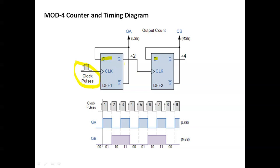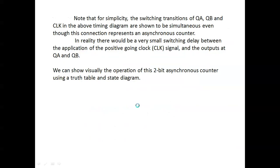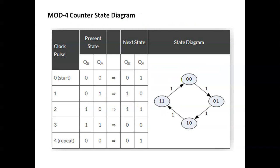The clock is applied to the first device, and the second device receives the clock pulse of the first device. QA is the LSB and QB is the MSB. For the mod 4 count output: QA is the LSB value and QB is the MSB value. The state diagram shows: present state 0,0 goes to next state 0,1. The clock pulses cycle through 0, 1, 2, 3 — so we have a mod 4 counter.